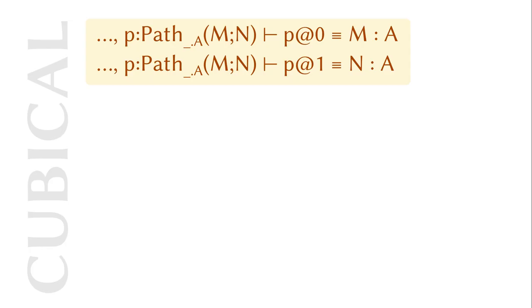The additional complexity brought by cubical type theory is that we have actual equalities specified by boundaries. For example, suppose P is a path from M to N. Intuitively, we want to reduce P at 0 to M and P at 1 to N. However, this is neither a beta reduction nor an eta expansion.